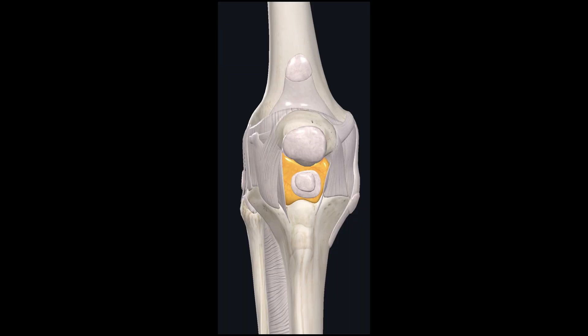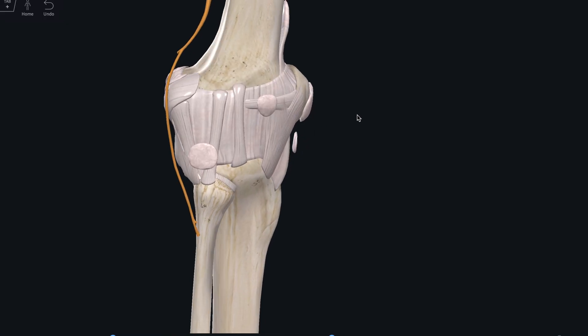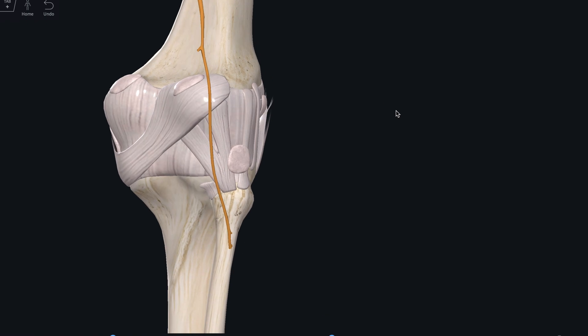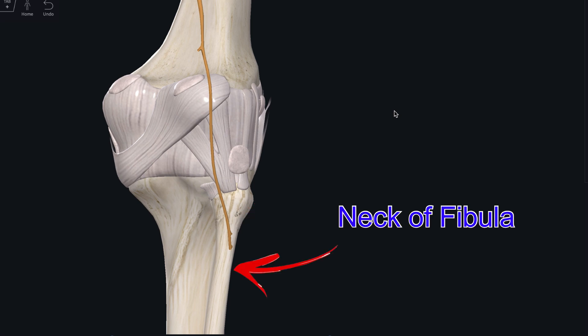Fractures of the proximal fibula are significantly associated with injury to the ligamentous and neurovascular structures, and the most vulnerable structure is the common fibular nerve, also known as the common peroneal nerve. It crosses posterior lateral to the neck of the fibula and can be rolled against the underlying bone at this location.